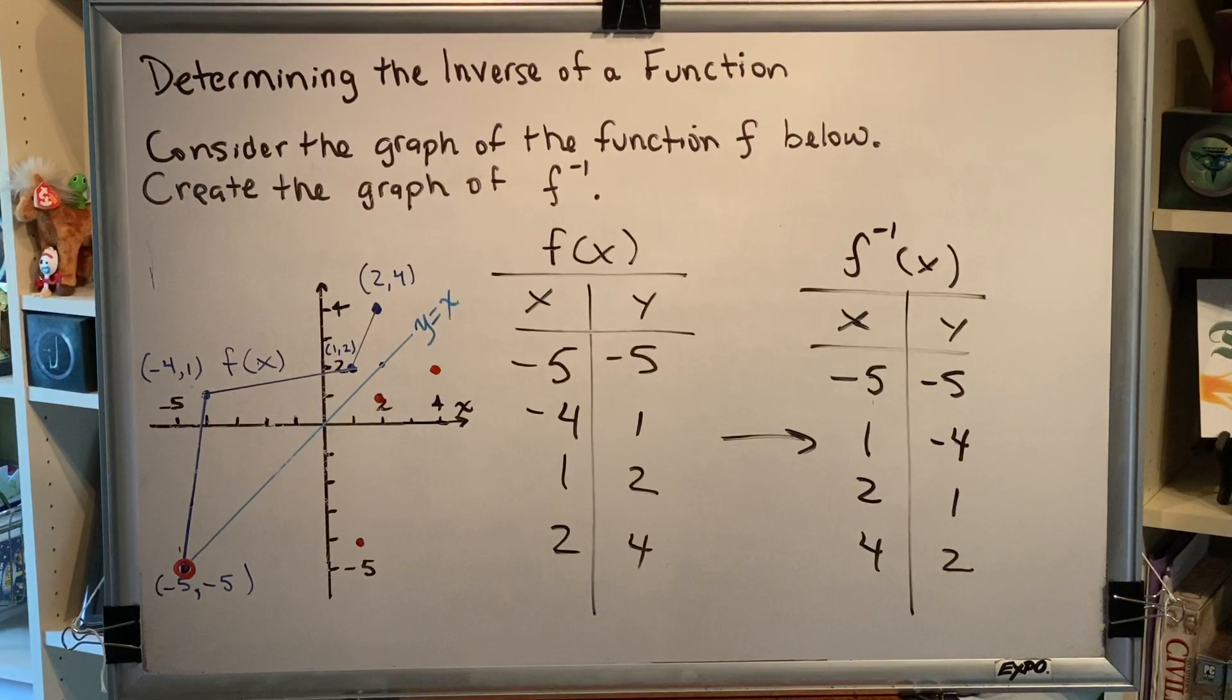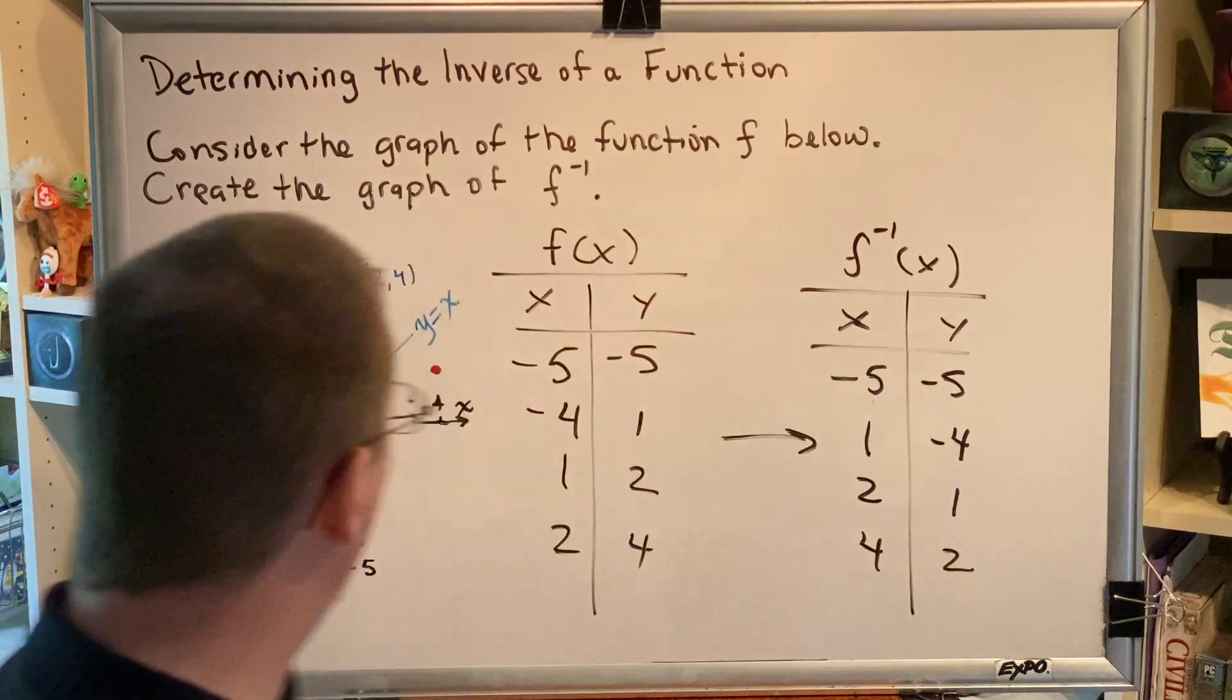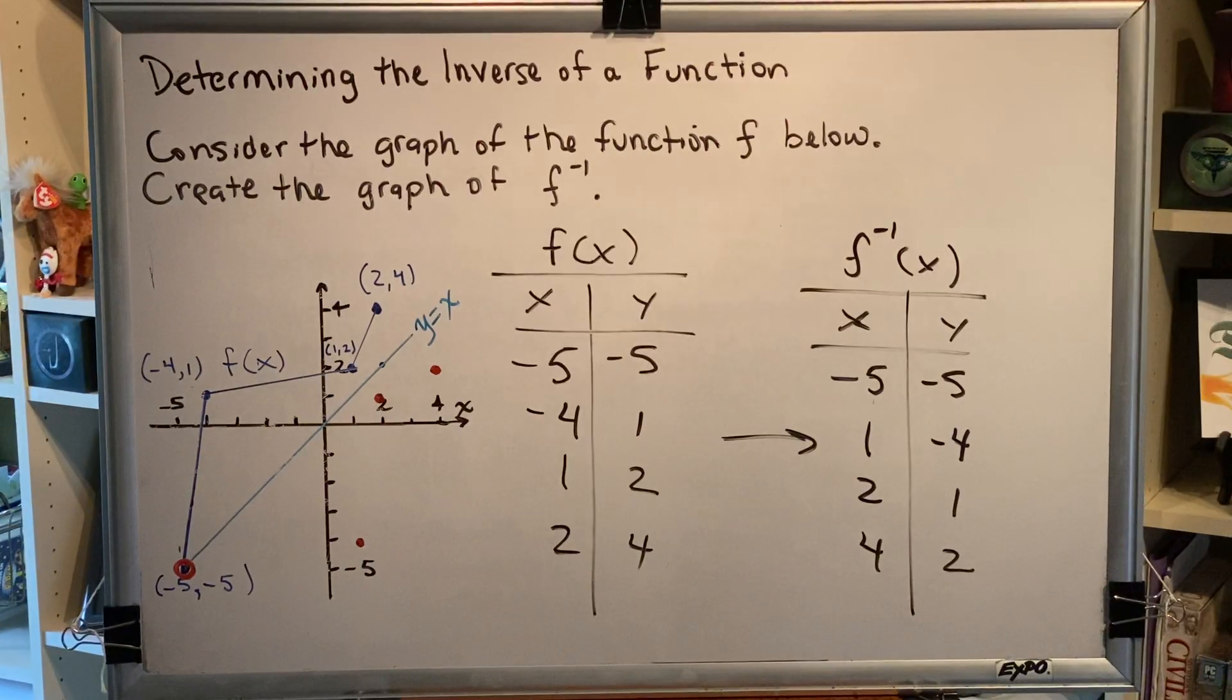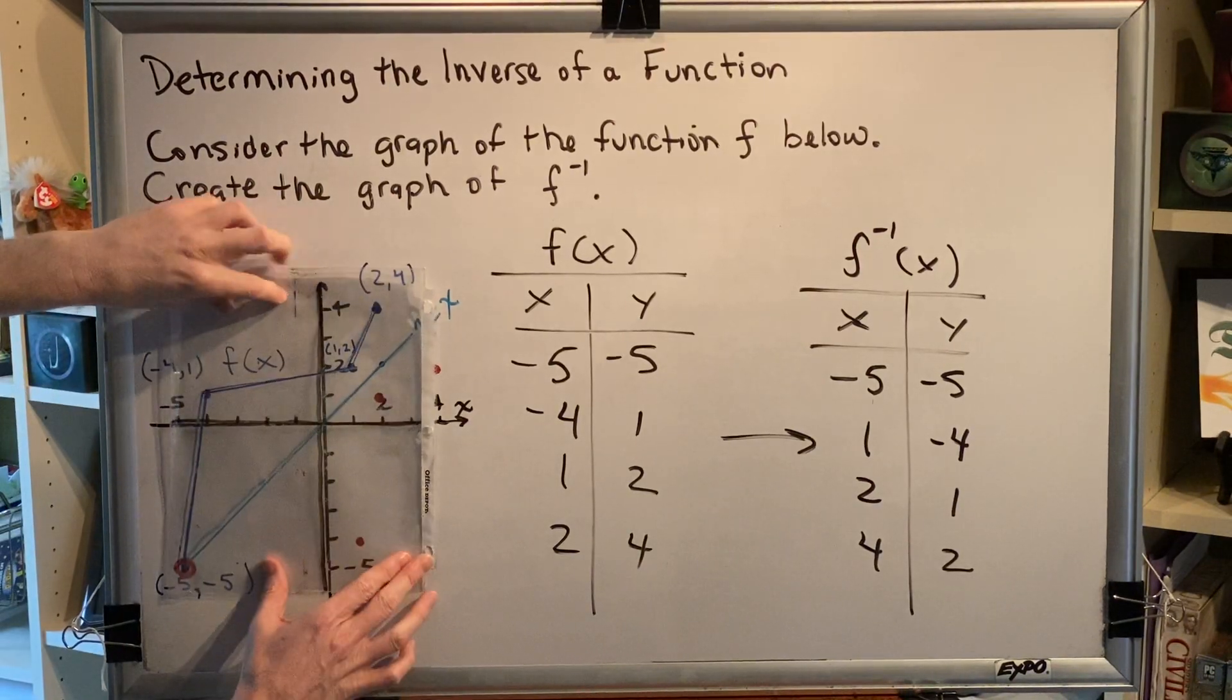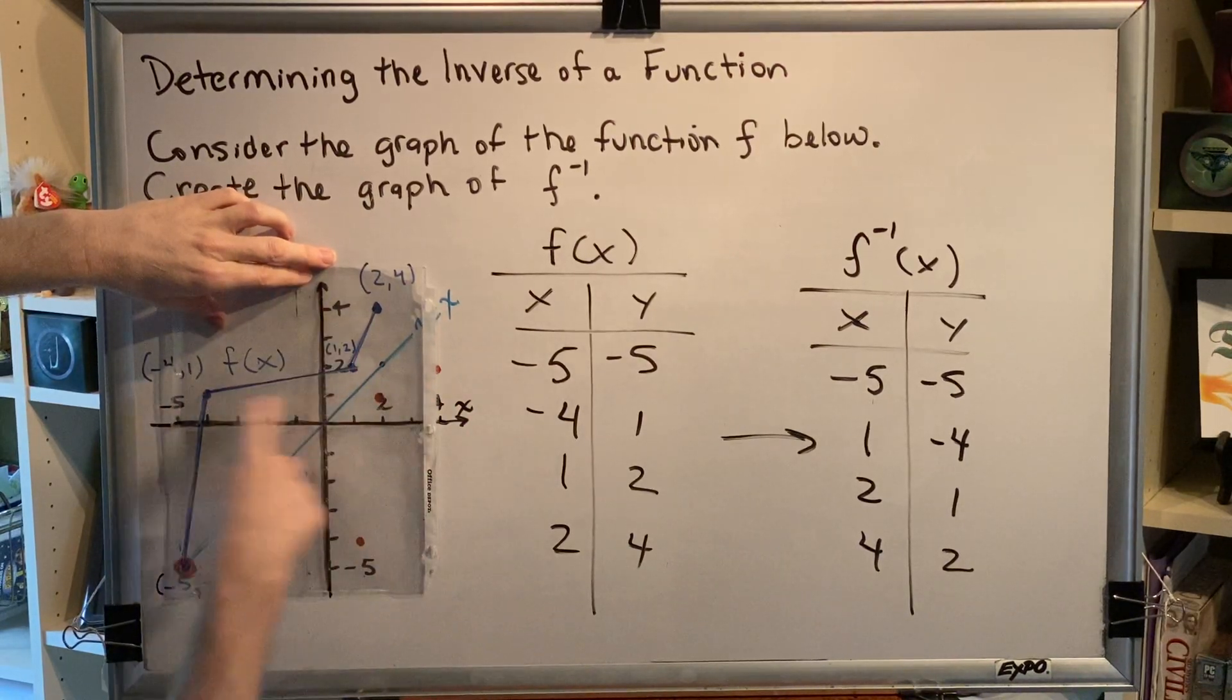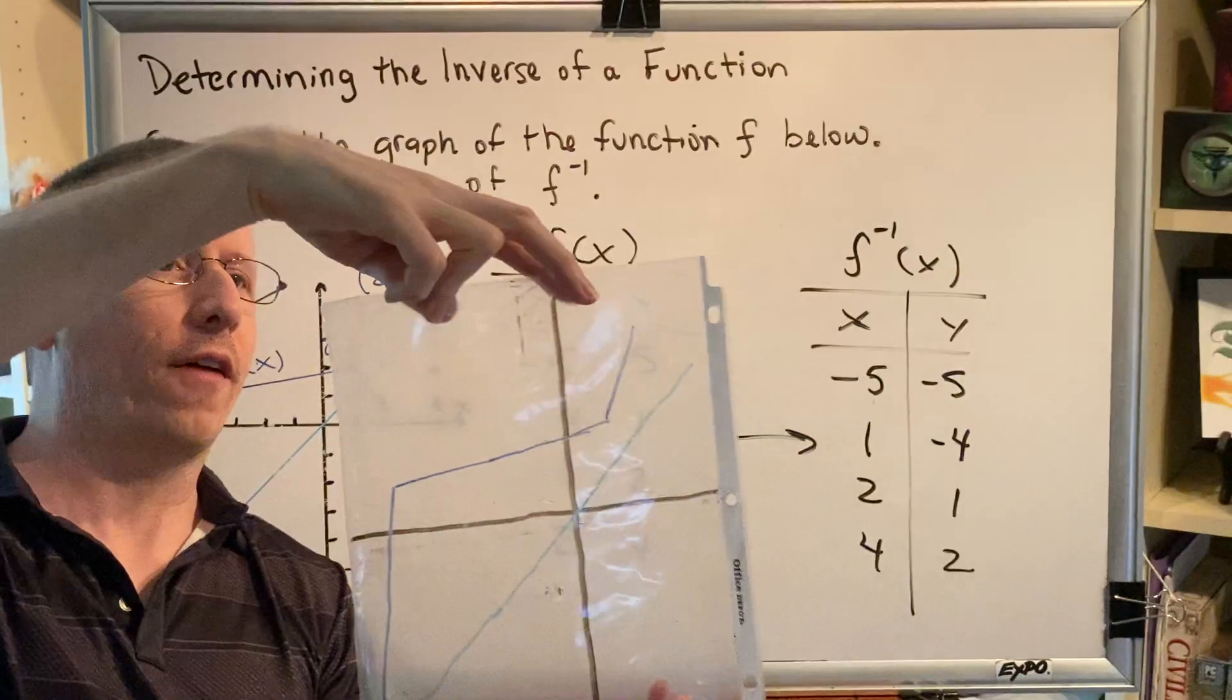Now we need to find a way to create the entire graph, not just those four points that we happen to know about. So I'm going to use a teaching tool here. I've created a transparency of the graph of f of x and the line y equals x and the x and y axis. So you can see on this transparency that I have the graph.